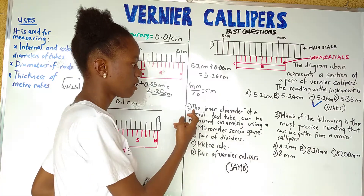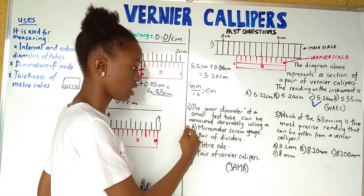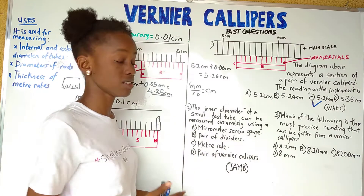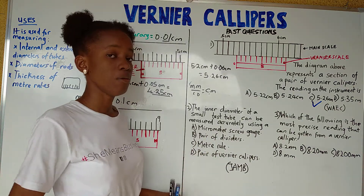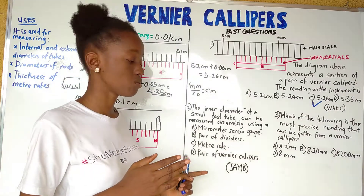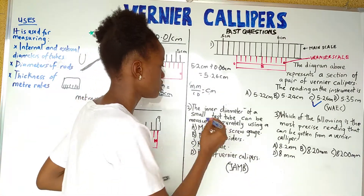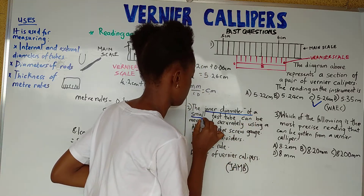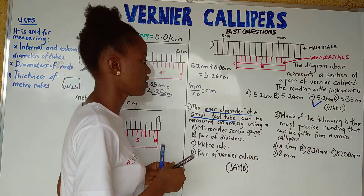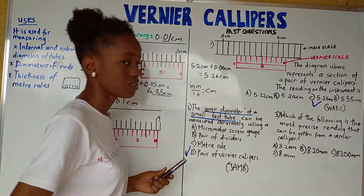The second question is a JAMB question: 'The inner diameter of a small test tube can be measured accurately using: A. Micrometer screw gauge, B. Pair of dividers, C. Meter rule, D. Pair of vernier calipers.' The answer is D — pair of vernier calipers — because one of the uses of vernier calipers is to measure the internal and external diameters of tubes, and in this case we are measuring the inner diameter of a test tube.